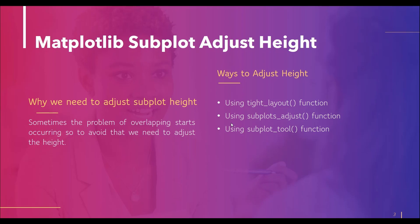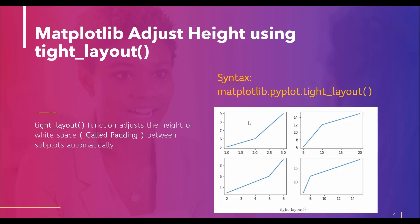Let's discuss the first method by which we can adjust the height. We will use the tight_layout function of the pyplot module of matplotlib to adjust the height of the white space — also known as padding — between the subplots automatically.